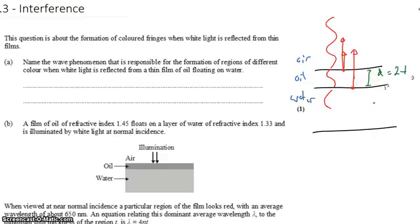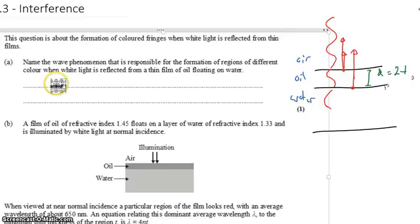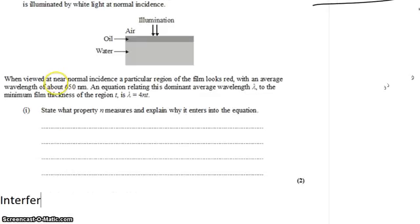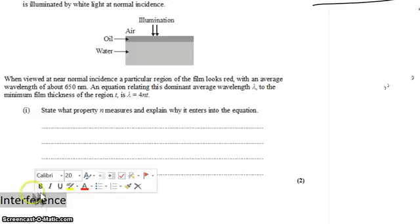If that path relates to a whole wavelength, you get constructive interference. If it relates to half a wavelength, you get destructive interference. So what is the phenomenon? It's interference. Specifically, thin film interference.